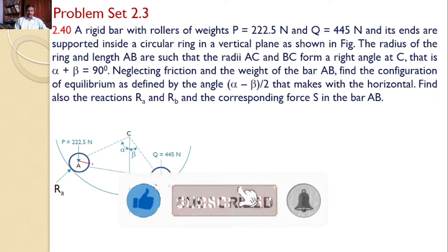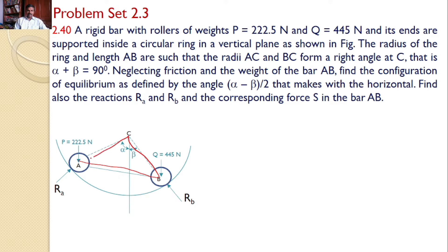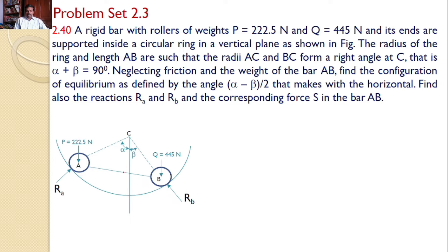That means ABC forms a right angle triangle with a right angle at C. Neglecting friction and weight of the bar AB, find the configuration of equilibrium as defined by the angle alpha minus beta by 2 that makes with the horizontal. Find also the reactions RA and RB and the corresponding force S in the bar AB. So our interest is to find the force in the rod AB, the reactions RA and RB, and the angle alpha minus beta by 2.